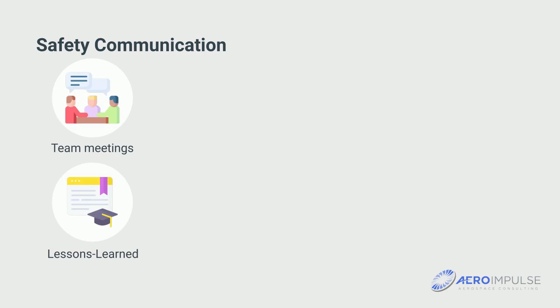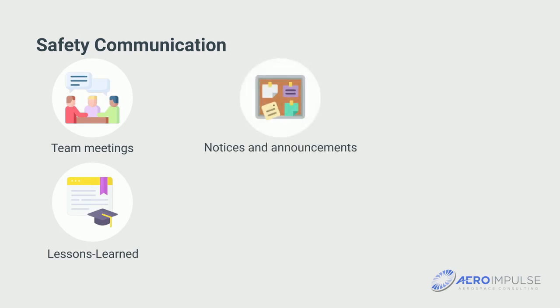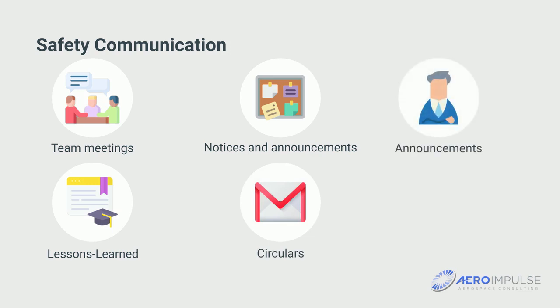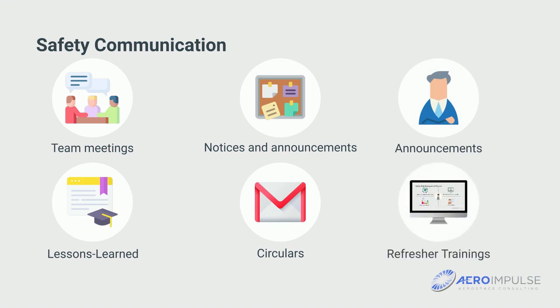Discuss safety issues in team meetings. Lessons learned sessions. Notices and announcements, for example, on the status of the safety targets. Circulars or info mails on safety topics. Announcements by the boss at staff meetings. Refresher training every two years for safety training.